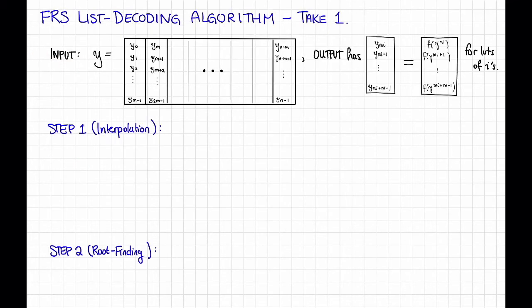As you might be used to by now, after seeing the Welch-Berlekamp algorithm, Sudan's algorithm, and the Guruswami-Sudan algorithm, this algorithm is going to have two steps. In the first step, we'll interpolate some polynomial to satisfy some constraints, and in the second step, we are going to find some roots of that polynomial.